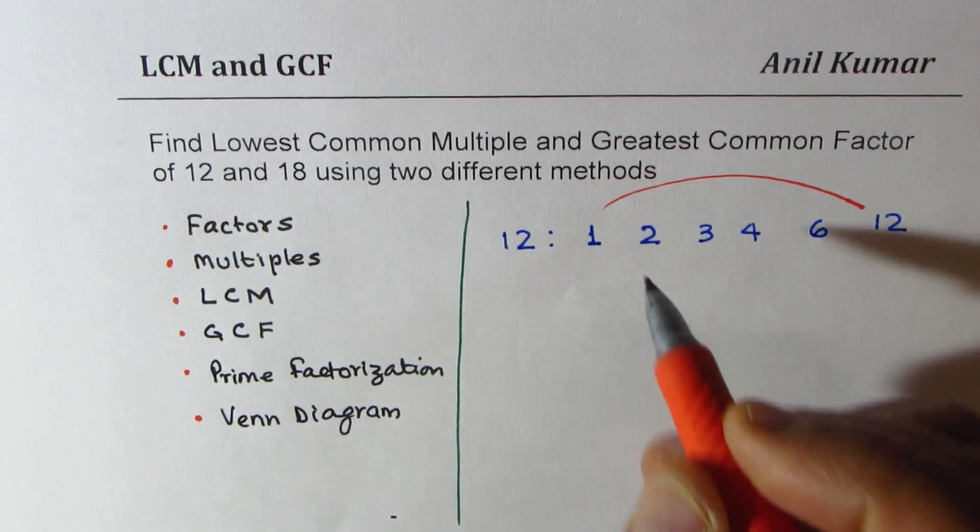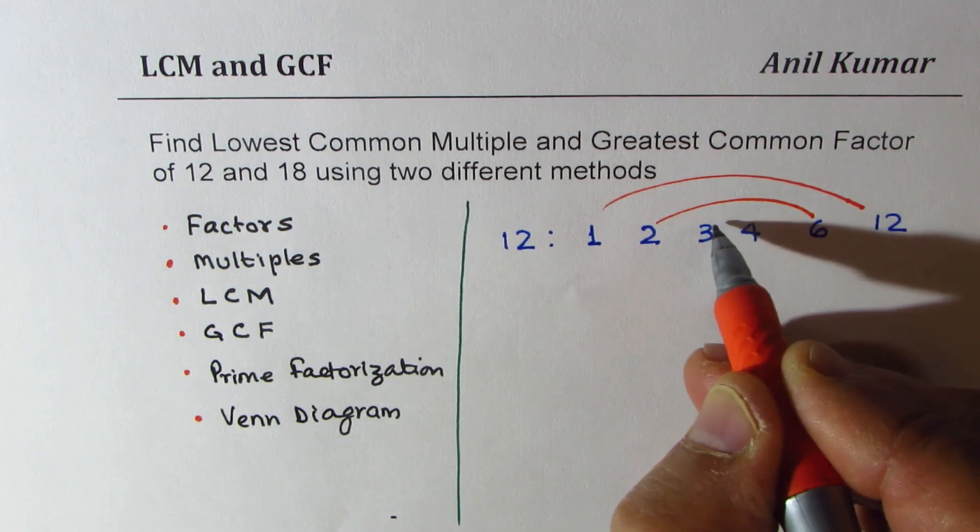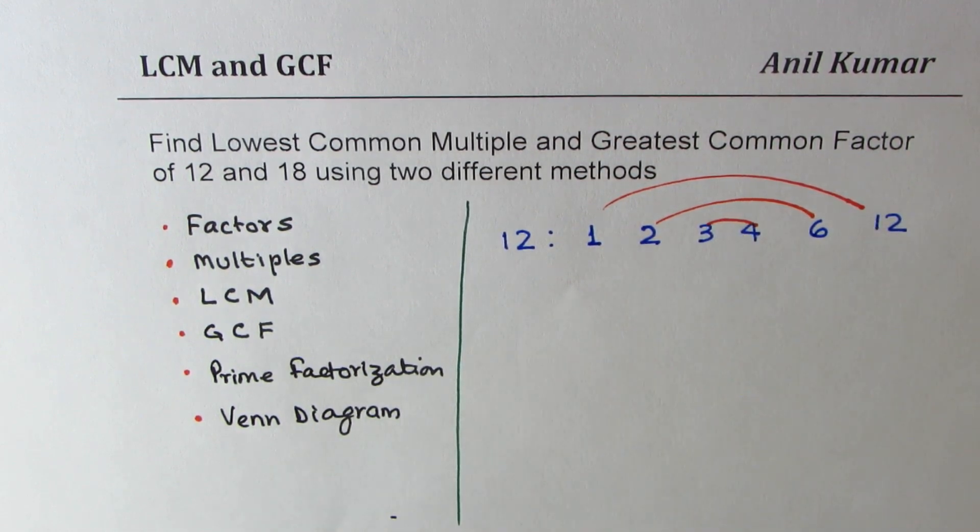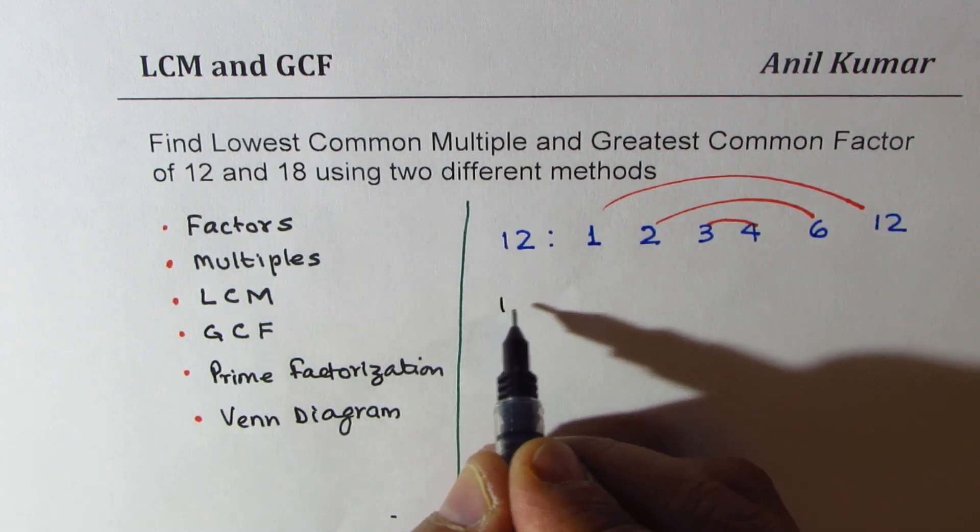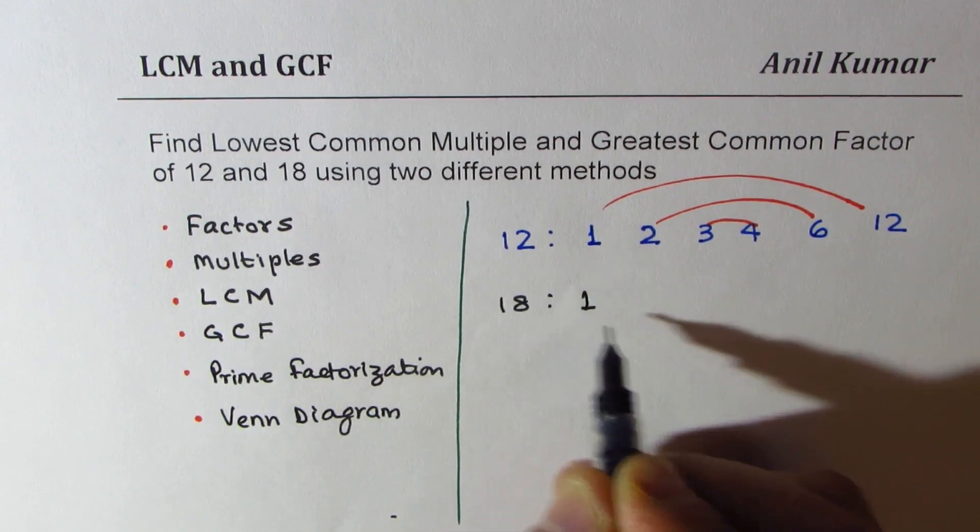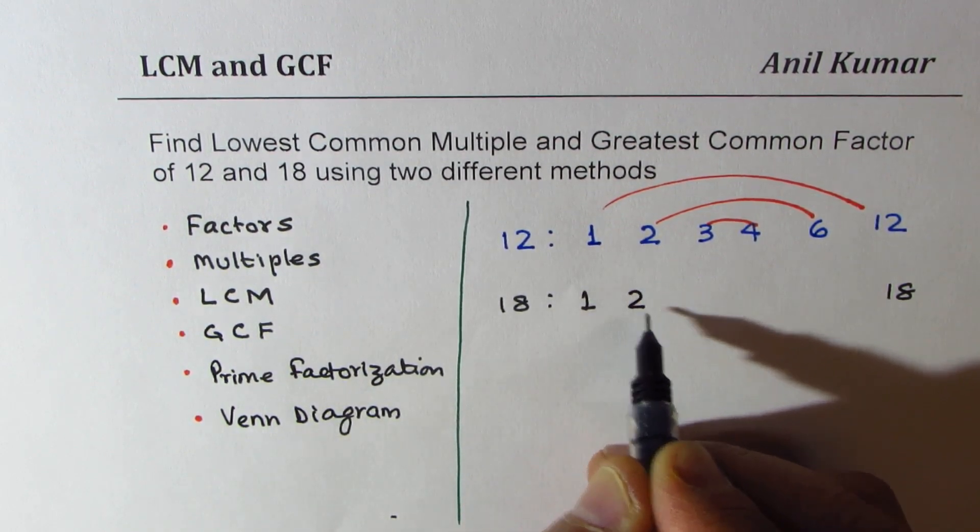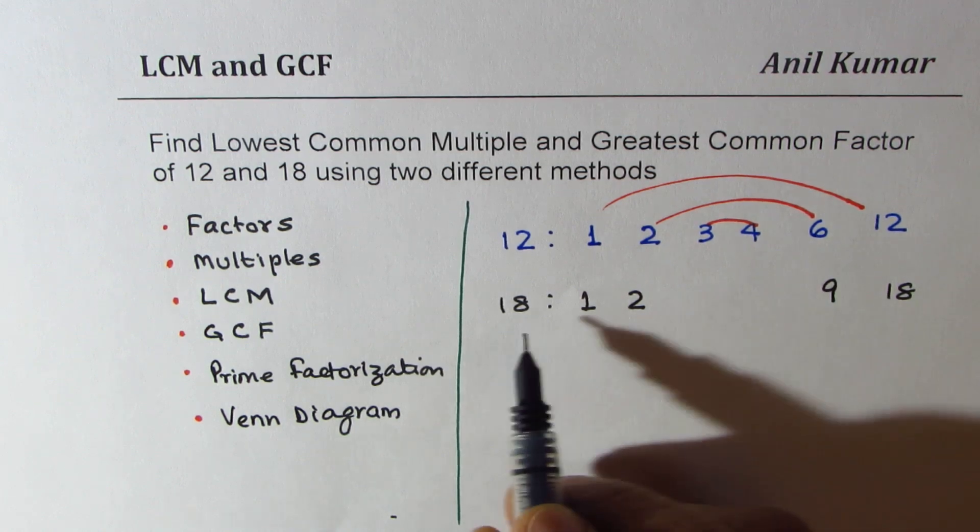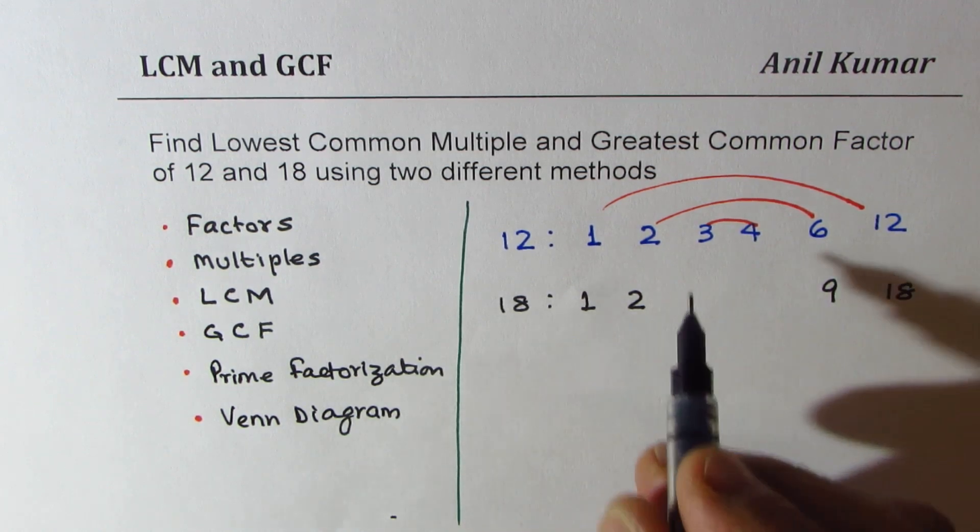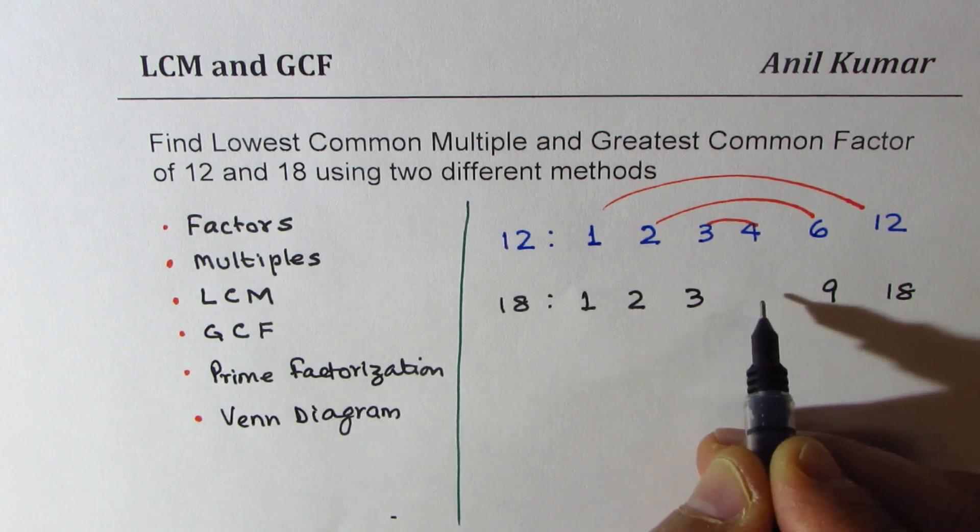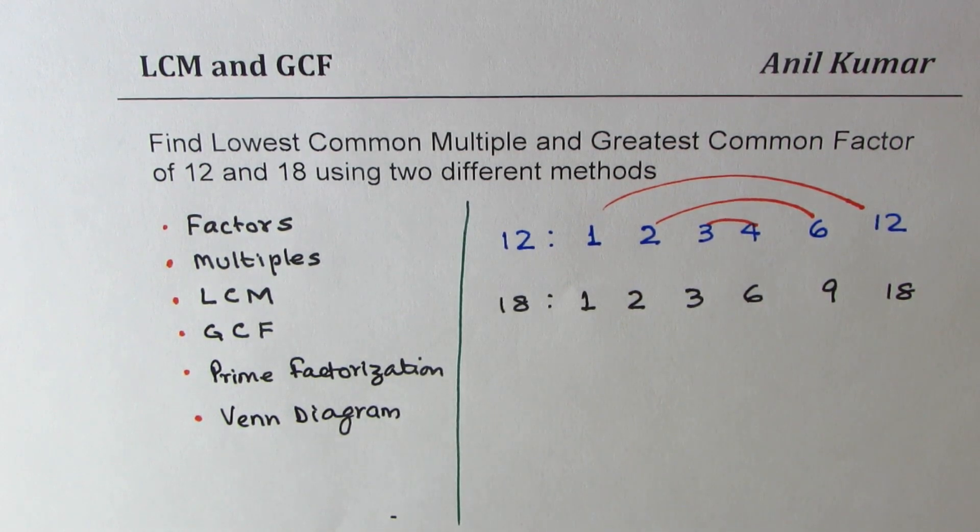We'll do the same exercise for 18. 1 times 18 is 18, it's also an even number so 2 times 9. If you can divide by 9 you can also divide by 3, so 3 times 6 is 18. That gives you the factors of 18.